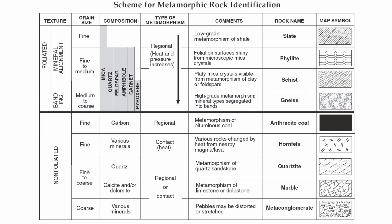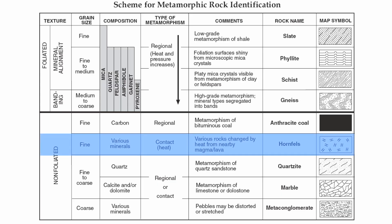Below those, you have your non-foliated rocks. Anthracite coal is made up of carbon, and it actually comes from the metamorphism of a sedimentary rock called bituminous coal — that's made from regional metamorphism. Hornfels is the only rock in the chart that strictly comes from contact metamorphism. Again, small crystals, and it comes from a variety of different rocks.